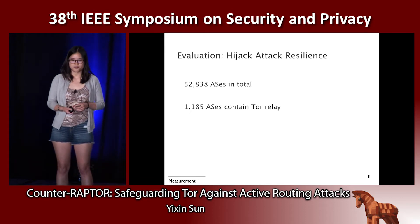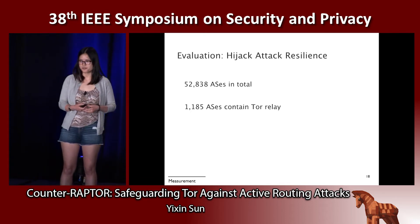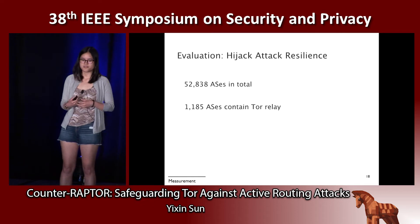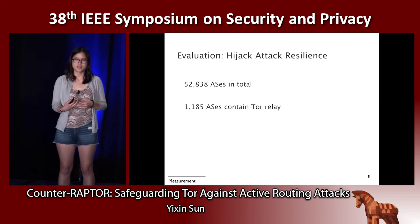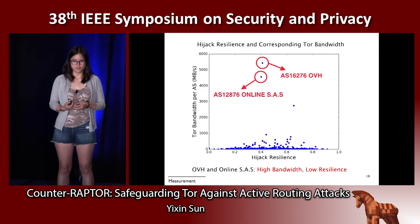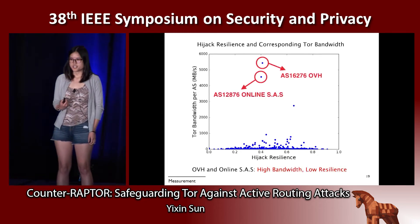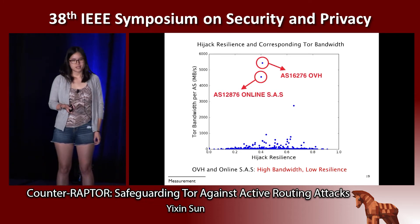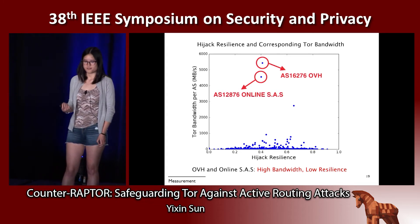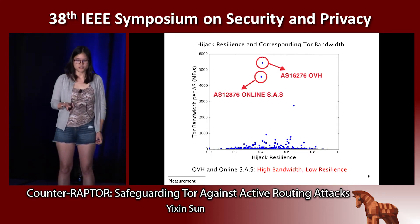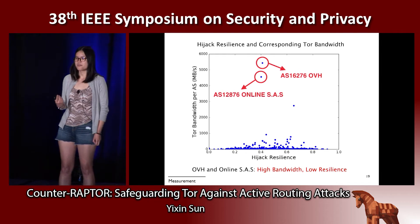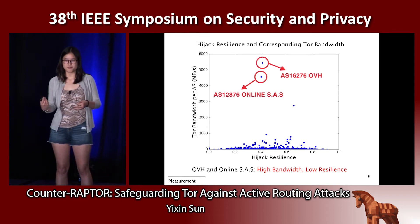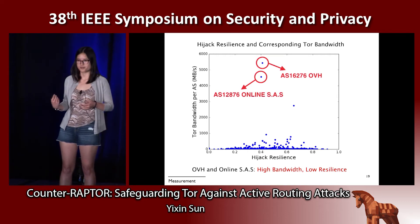We evaluated hijack attack resilience considering more than 52,000 ASs in the internet topology, and identified more than 1,100 ASs containing Tor relays as potential victims. A graph shows the hijack resilience of each Tor-related AS and their corresponding Tor bandwidth. There are two clear outliers: OVH and online SAS. They both have very high Tor bandwidth while having relatively low resilience to attacks compared to other Tor-related ASs.